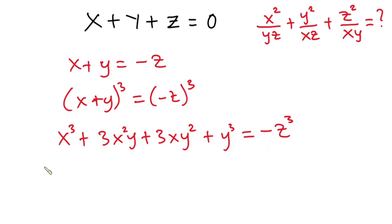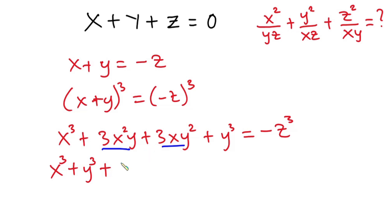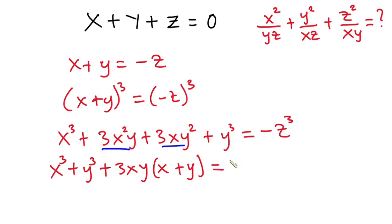So now let's simplify this. We have x to the power 3 plus y to the third power, and from here we have 3xy in both terms, so we can factor 3xy out. So we have 3xy times (x plus y), and this is equal to negative z to the third power.